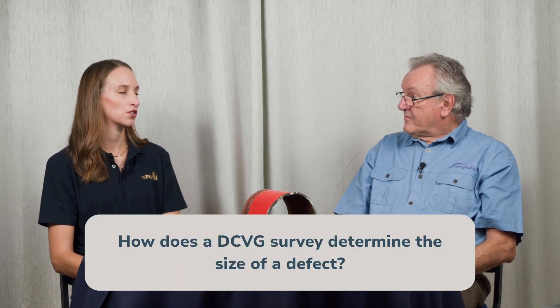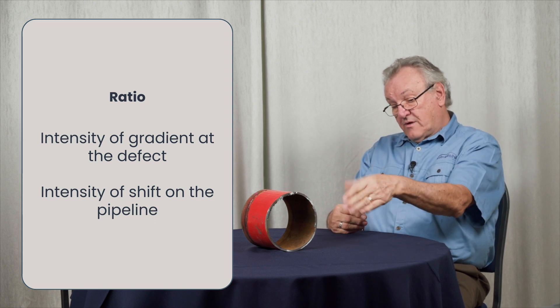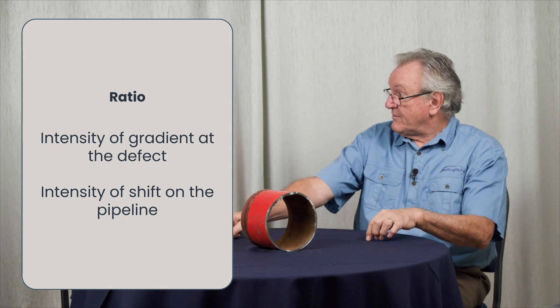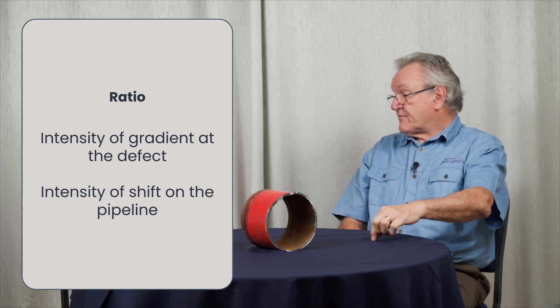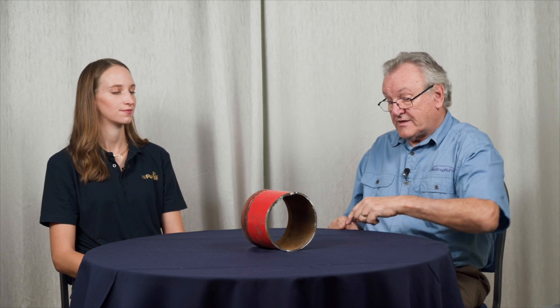How does a DCVG survey determine the size of a defect? It's really just by a ratio. You need to know the intensity of the gradient at the defect — measured with respect to remote earth — and the intensity of the signal on the pipeline, determined by measuring pipeline potential at two adjacent test points and taking an interpolation between them, or by using a trailing cable. You then work out the ratio of those two factors based on the shifting potential.